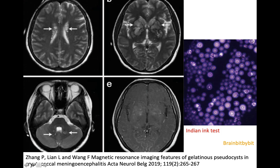As a rule of thumb, normal large perivascular spaces are about three millimeters, and if they're larger, you should think of cryptococcus. The perivascular spaces are also enlarged along the ventricle and in the infratentorial compartments.